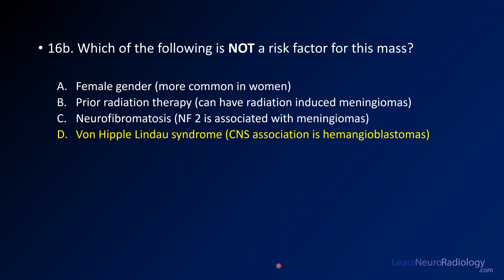This is a tricky question if you didn't know what the mass was, but you can work through it. All of options A, B, and C are associated with meningiomas: they are more common in women; radiation therapy can lead to them, especially 10 to 15 years after radiation; and NF2 is associated with meningiomas, schwannomas, and ependymomas. The association with Von Hippel-Lindau is hemangioblastomas, and this was not a hemangioblastoma — so Von Hippel-Lindau is not a risk factor here.